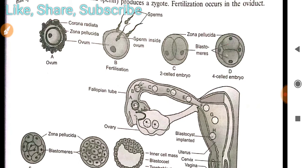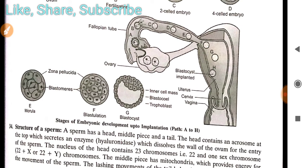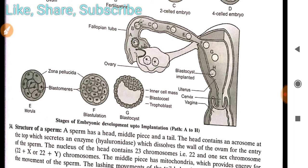When the sperm fuses with the ovum it is known as fertilization, after which development of the embryo starts. It begins as a two-celled embryo, then develops into a four-celled embryo. Different structural changes happen in the fallopian tube. The fertilized egg develops in the uterus, forming the blastocyst, and the blastulation process occurs. After that, organ development starts.